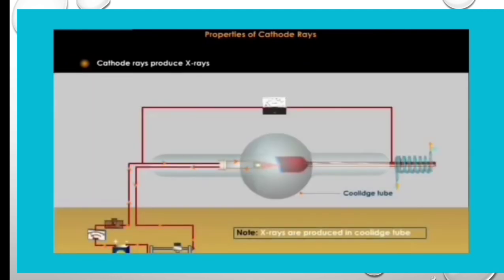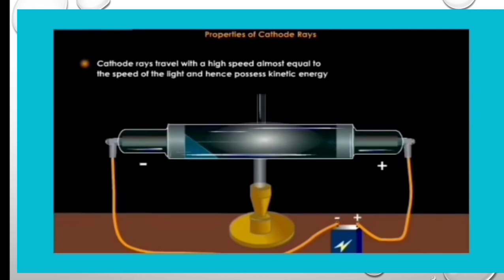Cathode rays produce X-rays. Cathode rays travel with a high speed almost equal to the speed of light and hence possesses kinetic energy. When cathode rays are made to fall on a wheel, the wheel starts rotating showing that the rays possesses kinetic energy.